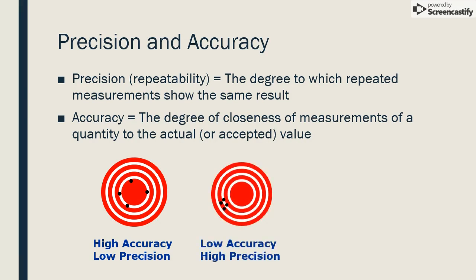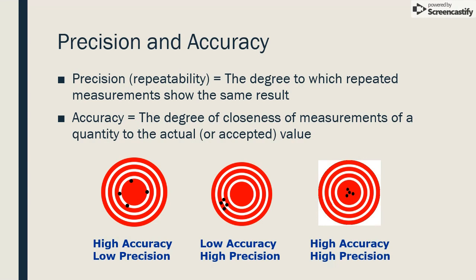The second target shows that the arrows or repeated measurements are close together, so the precision is high, but the center of the measurements is not close to the bullseye or the actual value being measured. The third target shows both precision, because the measurements are close together, and accuracy, because the center of the measurements is close to the target value.